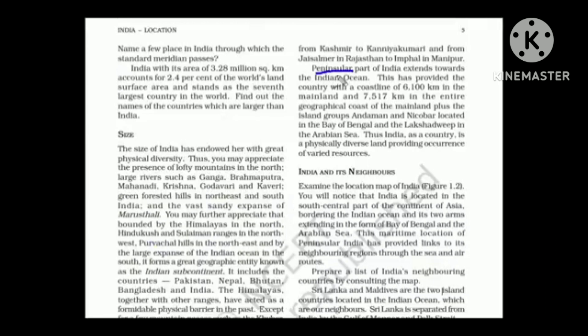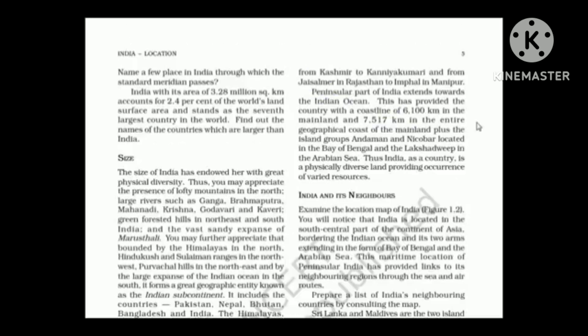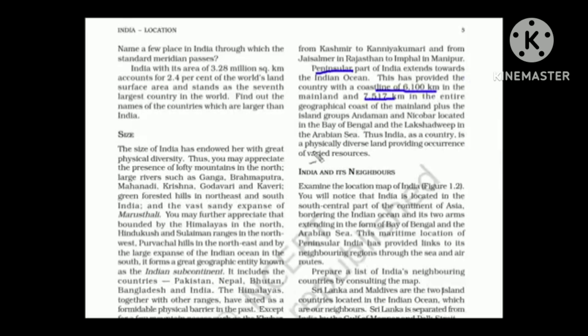India is a peninsula which means we are surrounded by water from three sides. That is Arabian Sea to the west, Indian Ocean to the south and Bay of Bengal to the east. We have a coastline of 6100 kilometers. Suppose this is India and here we have the water part. The distance of this coastline is exactly 6100 kilometers from west all the way to the south and then going to the east. With all of this, we are a country of physical diverse land.